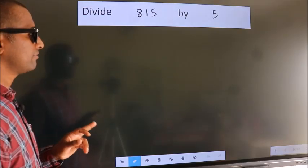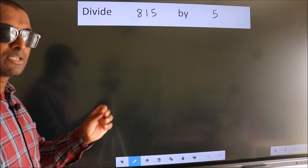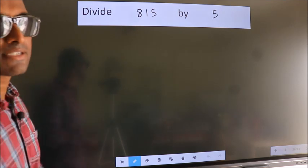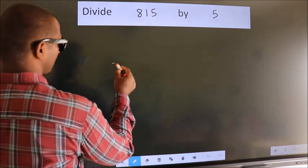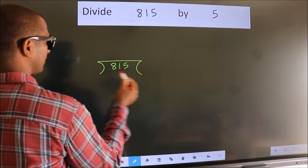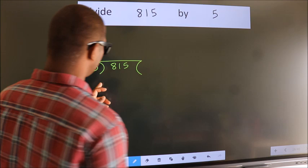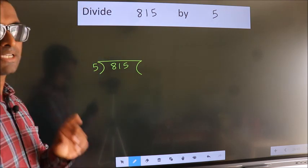Divide 815 by 5. To do this division, we should frame it in this way. 815 here, 5 here. This is your step 1.